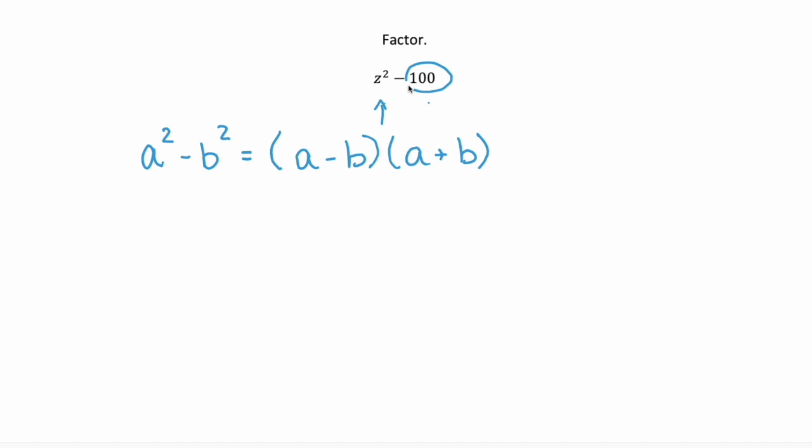Now we want to figure out what is 100 in terms of a square, because we know z² and minus what squared is 100. 10 squared. Now that we know that a for us is the letter z and b is a 10, we can plug those values into the factored form.